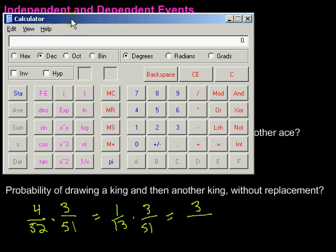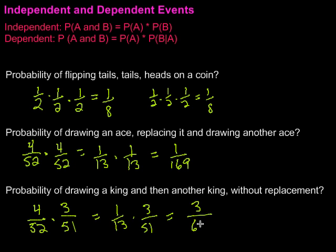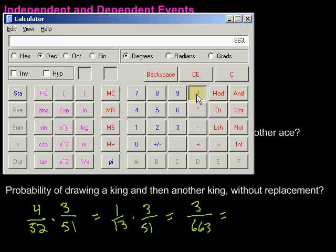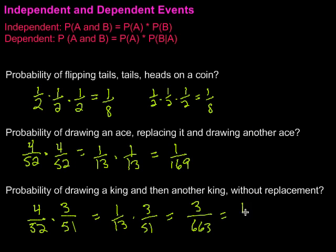So, 13 times 51 is going to give us 663. Looks like we can simplify that. Let's divide by 3 on the top and bottom there. So, 663 divided by 3 is going to give us 221. 1 out of 221.